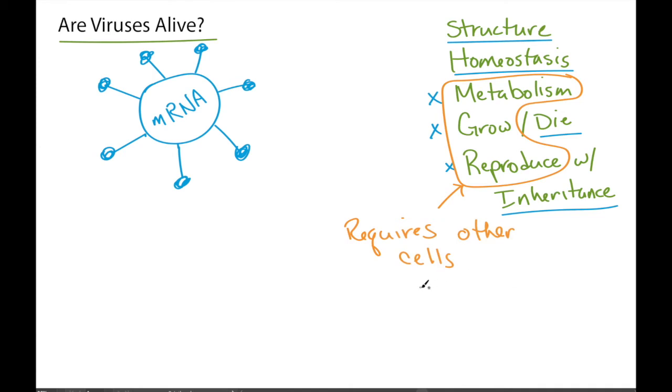These other cells can be bacteria or archaea, which are single-celled organisms. Or they can be eukaryotes, which includes fungi and plants and animals and a lot of the macroscopic life.